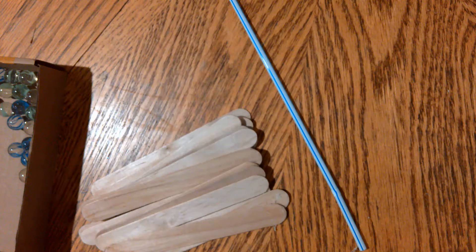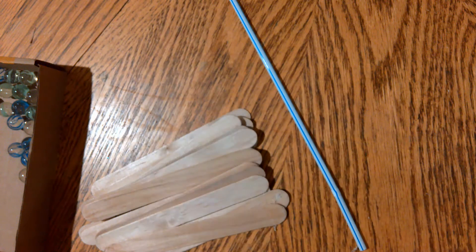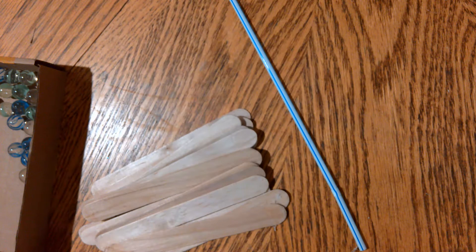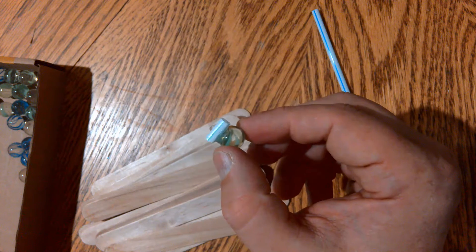You can use many different kinds of glue. Hot glue is the easiest but make sure you have an adult around if you're going to use this. If you pick up the kit from the library, your straw has already been hot glued to your marbles.